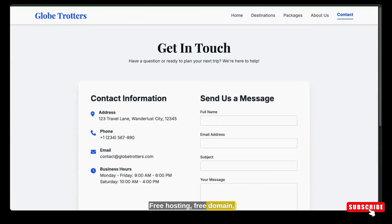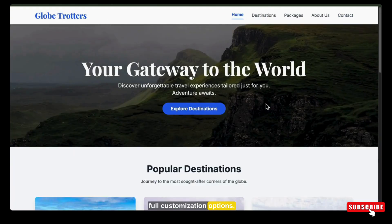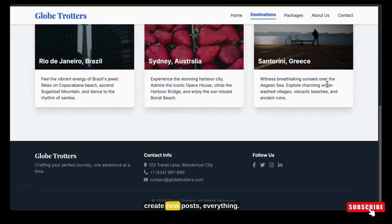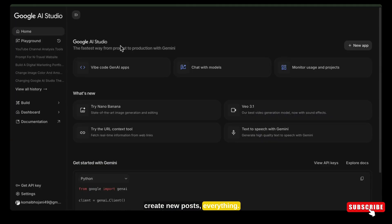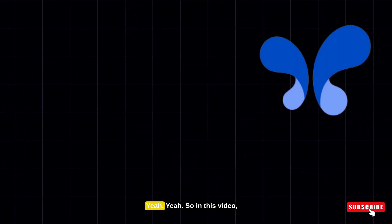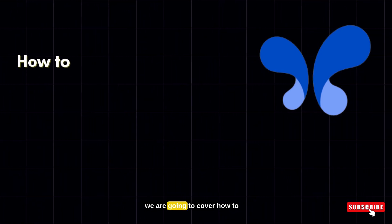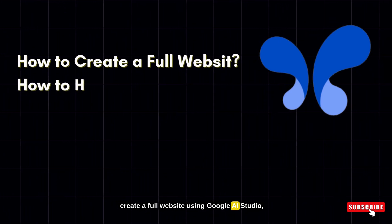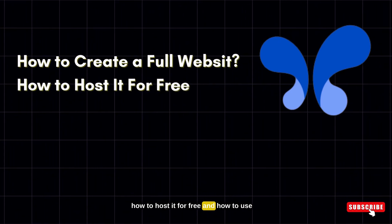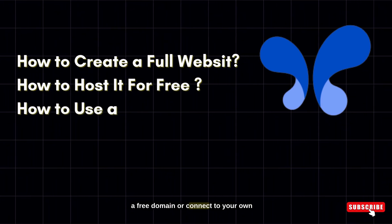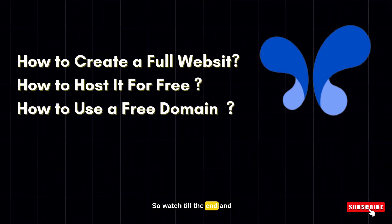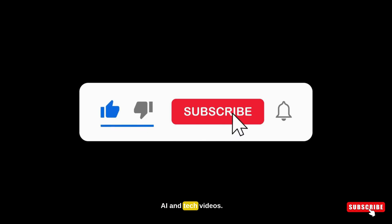You can change the theme, edit content, create new posts — everything. So in this video, we are going to cover how to create a full website using Google AI Studio, how to host it for free, and how to use a free domain or connect your own custom domain. Watch till the end and don't forget to subscribe for more AI and tech videos.